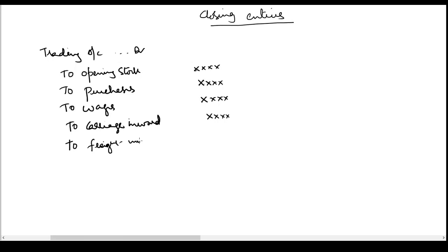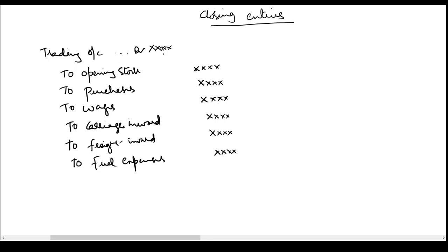Freight inward is used when we pay shipping companies for transport of goods; carriage inward is used for road transport. Then we have fuel expenses for transporting the goods. These expenses are transferred to the debit side of the trading account. By passing this entry, trading account is debited and these accounts — which already show a debit balance — get closed and their balances get transferred to the trading account.